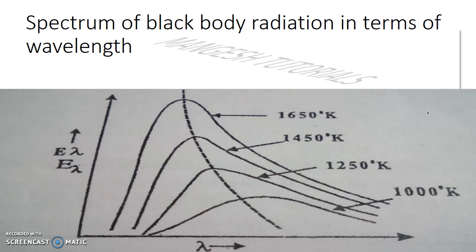In this diagram, the x-axis represents wavelength and the y-axis represents the intensity of radiation, denoted as E-lambda. The curves show the variation of intensity of radiation with wavelength at different constant temperatures.